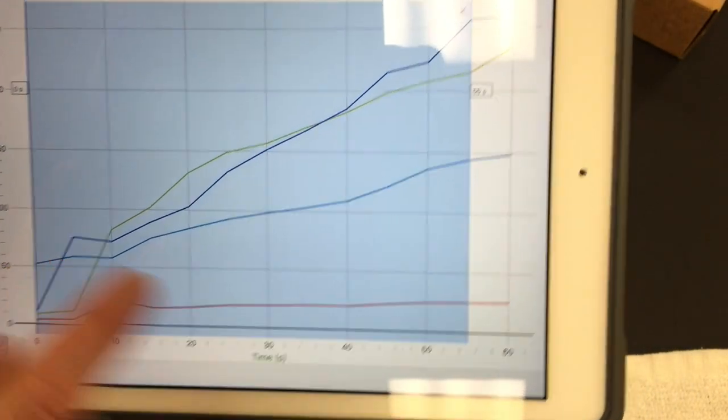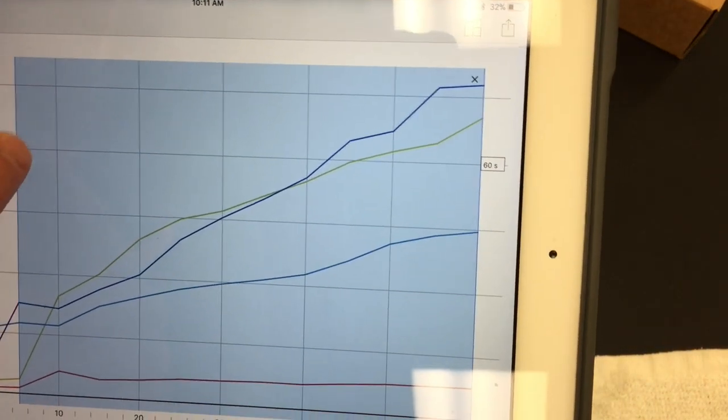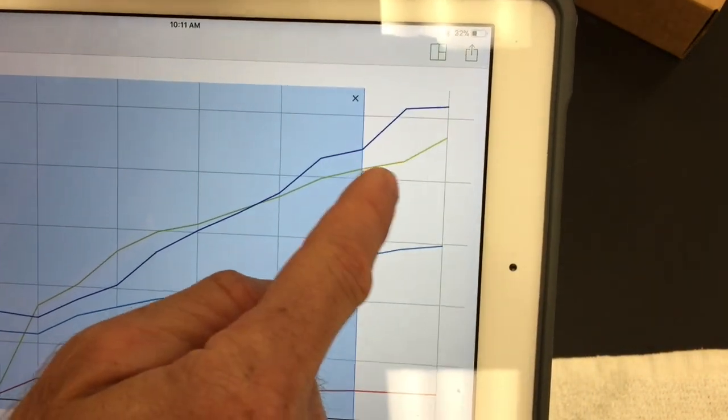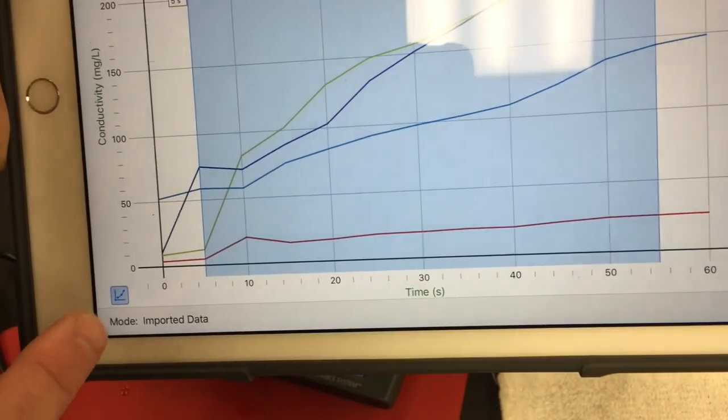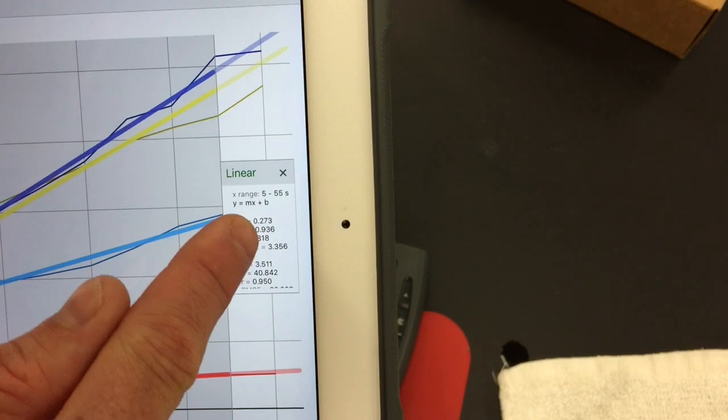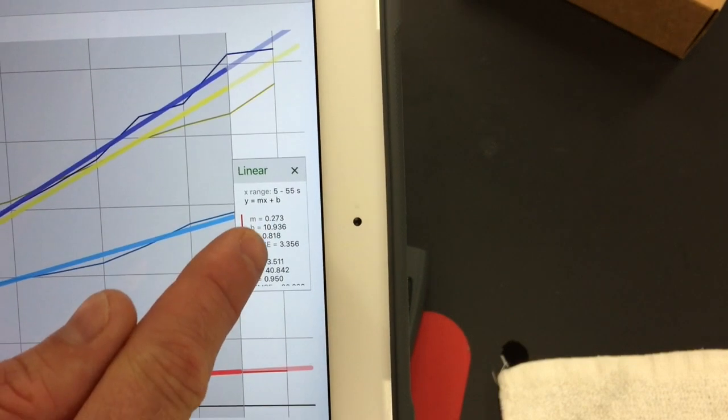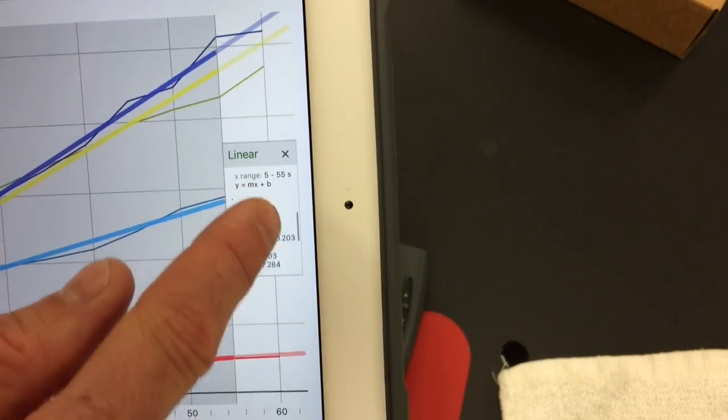You're going to need the slope of those lines. Select parts of the graph that you think are relevant. In the bottom left, select the graph, apply curve fit, and then in the equation line y equals mx plus b, m is the slope or the rate. Then you can make a data table showing what the rate is for each of the salt solutions.